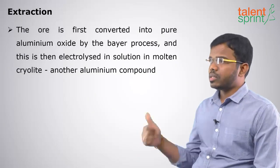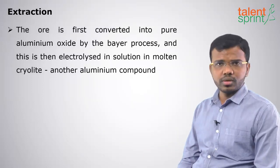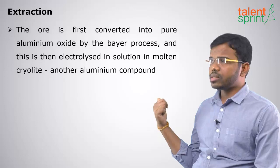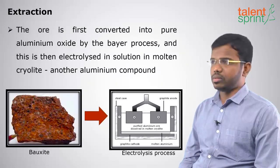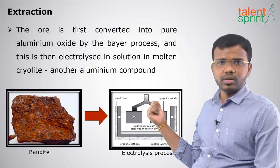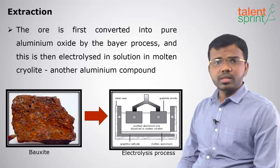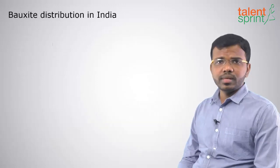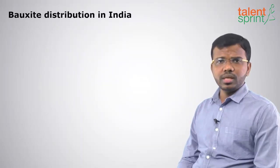Aluminium is extracted from Bauxite ore and converted into pure Aluminium oxide by the Bayer process. After that, electrolysis is involved to obtain the final Aluminium metal.